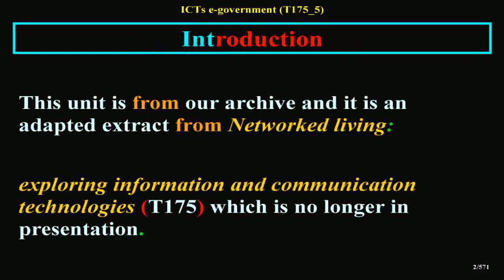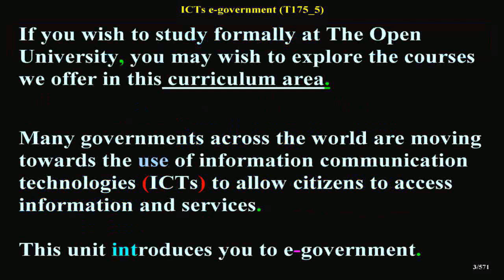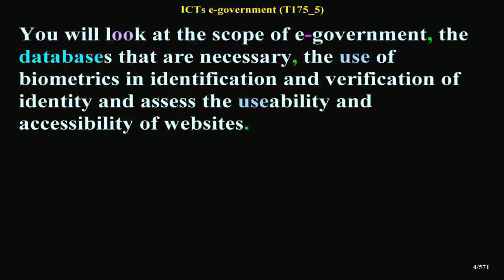This unit is from our archive and is an adapted extract from Networked Living: Exploring Information and Communication Technologies T-175, which is no longer in presentation. If you wish to study formally at the Open University, you may wish to explore the courses we offer in this curriculum area. This unit introduces you to E-Government, covering its scope, the databases that are necessary, the use of biometrics in identification and verification of identity, and how to assess the usability and accessibility of websites.